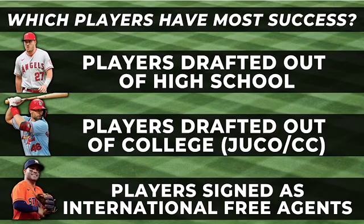As many of you already know, there are three ways players are acquired by Major League Baseball organizations. First, players can be drafted out of high school. Second, players can be drafted out of college or junior colleges. And finally, players can be signed as international free agents during the international signing period.